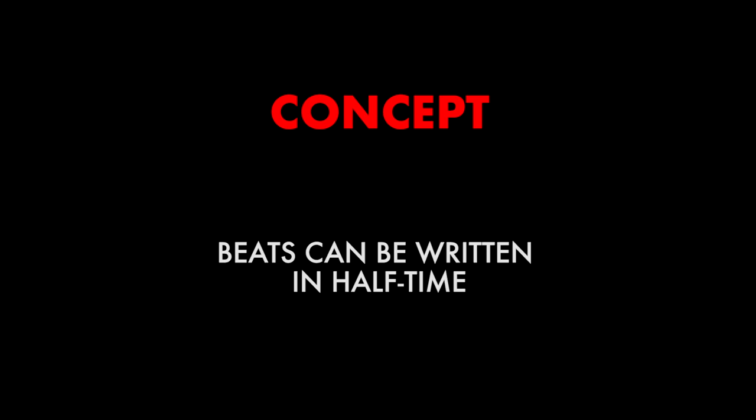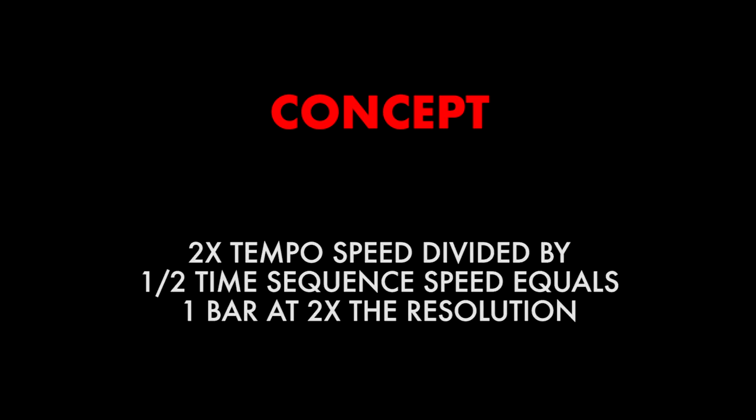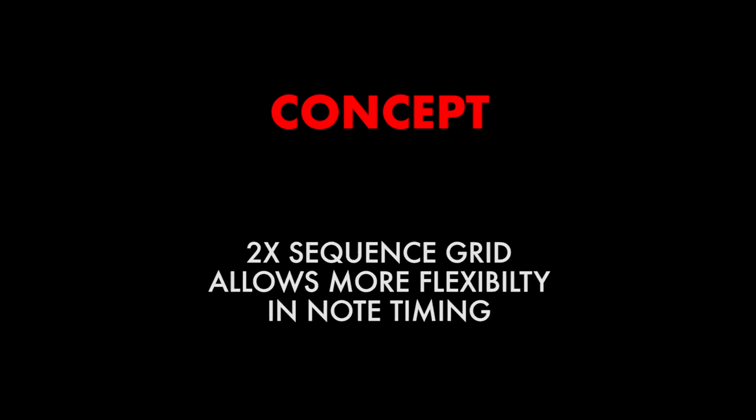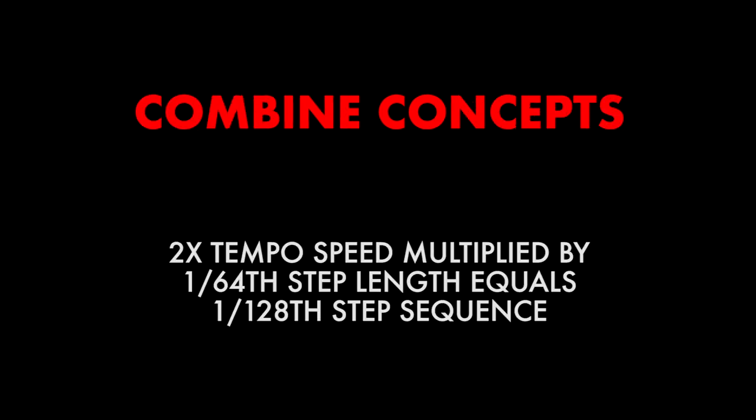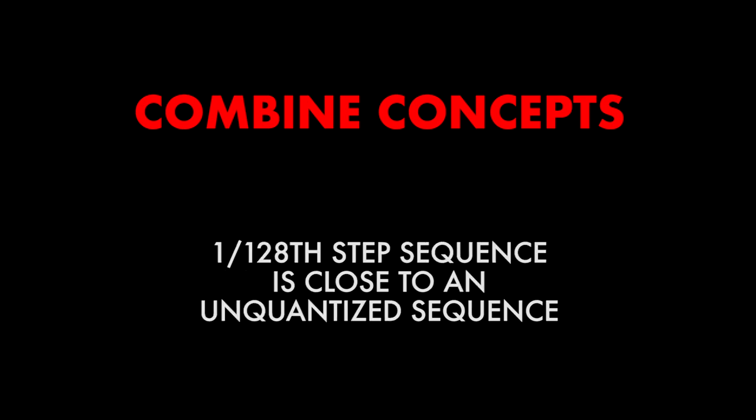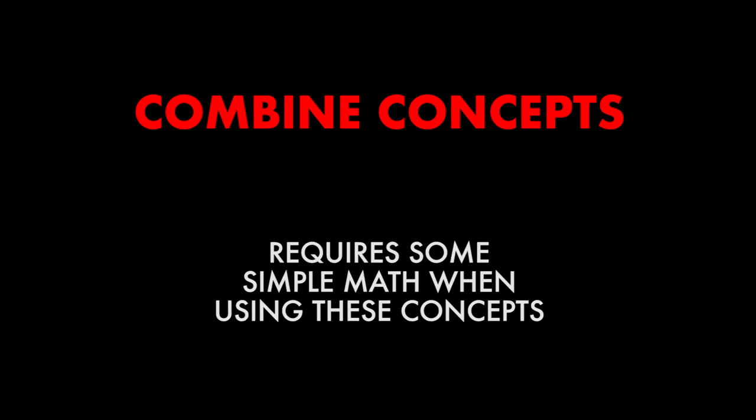We have one more trick to show you. Many beats today are actually written in halftime, meaning that the tempo setting in the song file is actually twice the speed of the final song. This results in a higher resolution grid and more flexibility in note timing. If we combine these concepts, we can get a grid pattern that is technically 1/128th of a step, which is as close to unquantized as the black box can currently get. Although these settings are easy to adjust, there's a bit of math to keep in mind while you're crafting your beat.